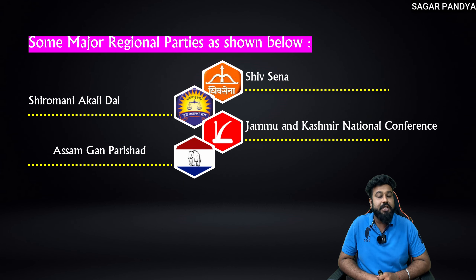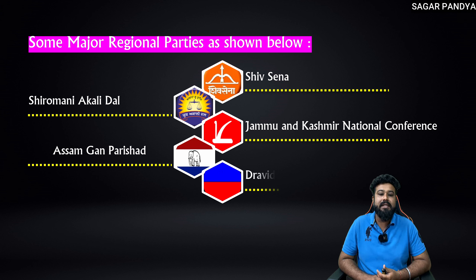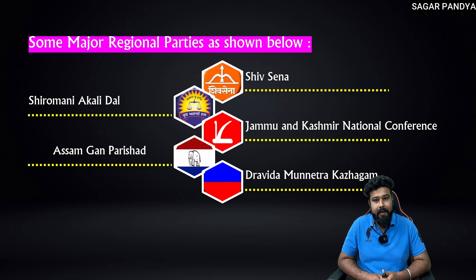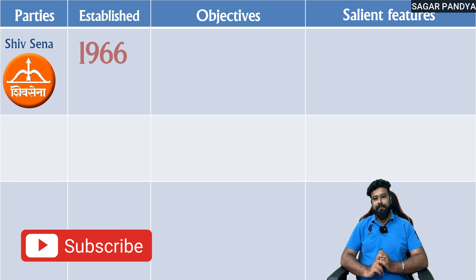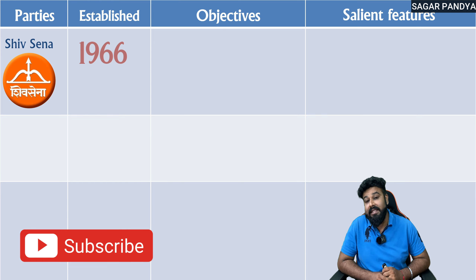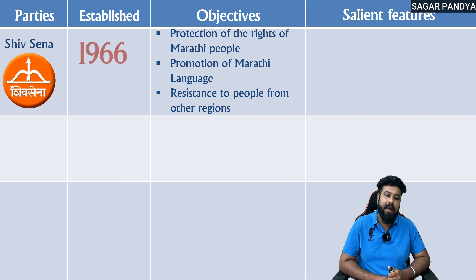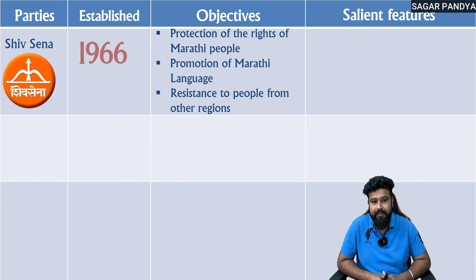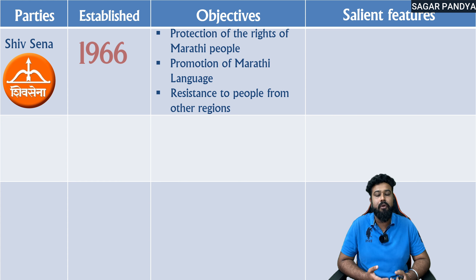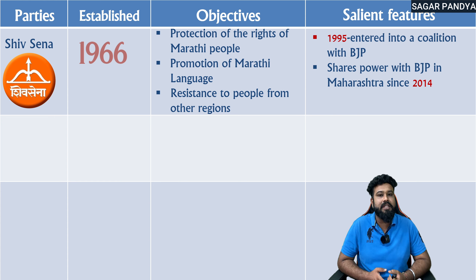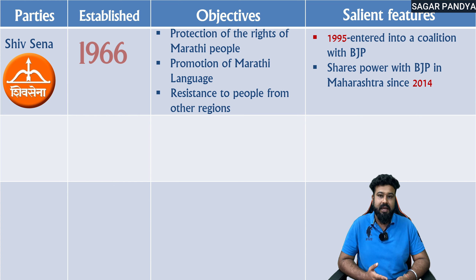Some prominent regional parties include: Shiv Sena, established in 1966, with the objective of protection of the rights of Marathi people, promotion of Marathi language, and resistance to people from other regions. In 1995, Shiv Sena formed a coalition with BJP and shared power. From 2014 till 2022, Shiv Sena was in support of the BJP government.